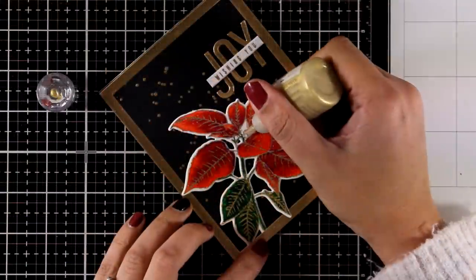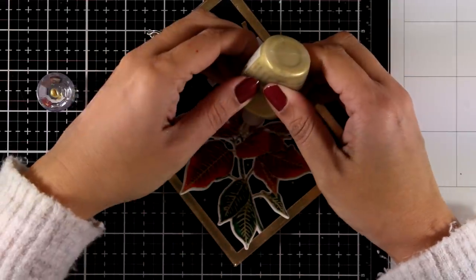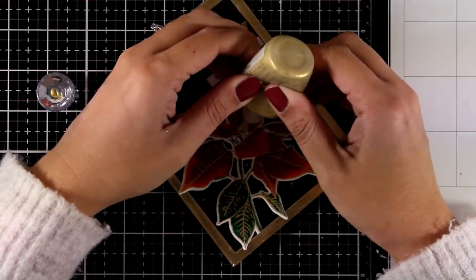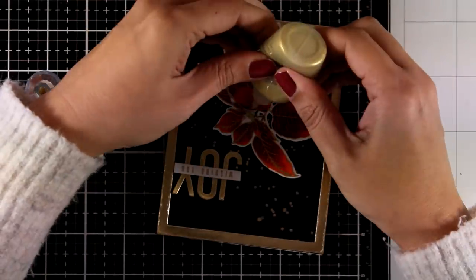And to finish off my card I added a couple of dots at the center of my poinsettia using my gold Nuvo drops. And my bottle is almost empty so I had to squeeze it really hard. But it worked at the end.